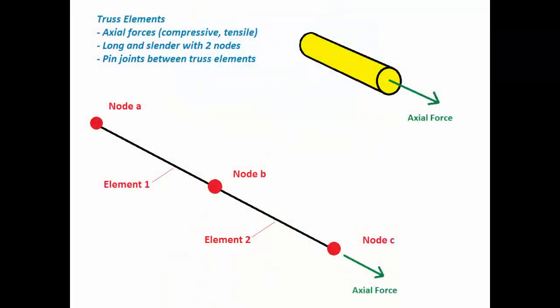In Abacus, truss elements carry only axial loads and they deform only by axial stretching. Basically, truss elements are one-dimensional bars or rods.